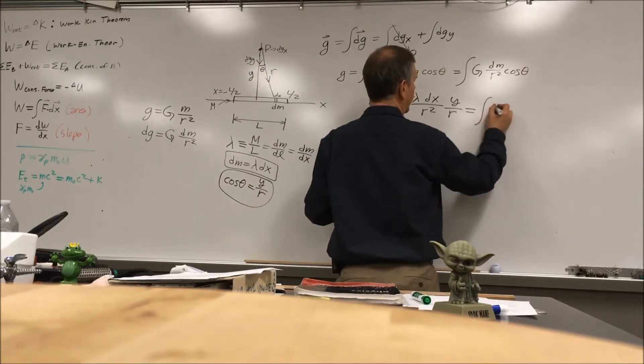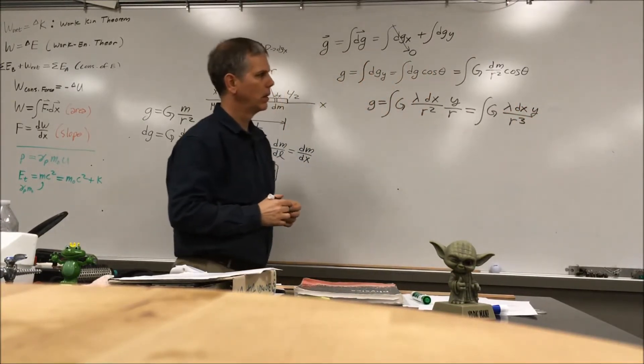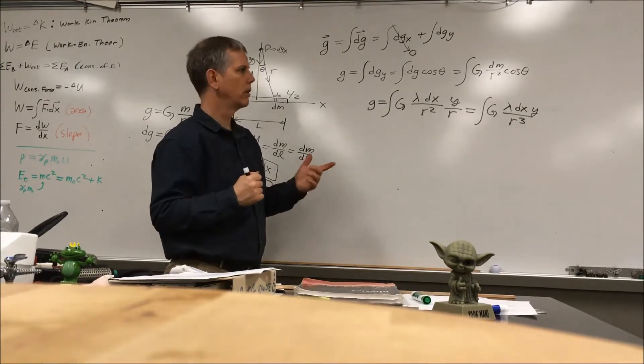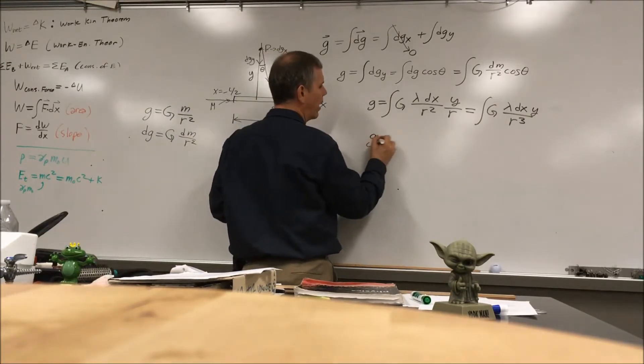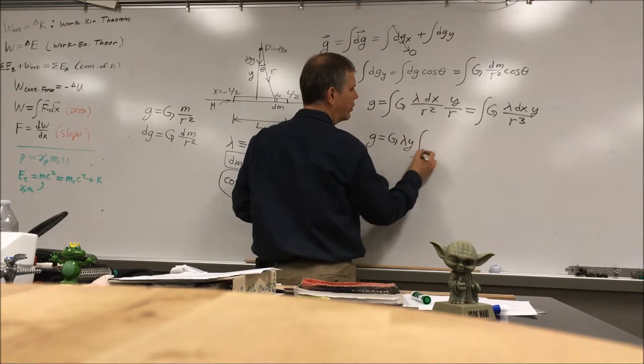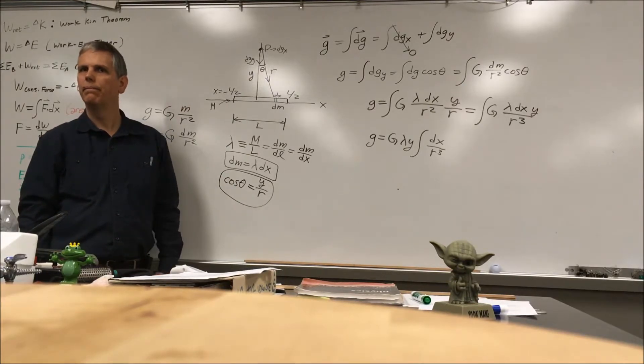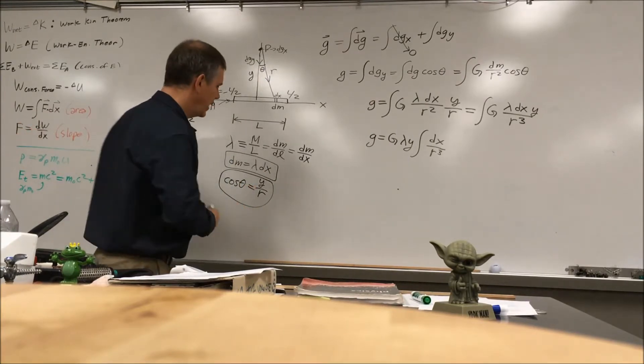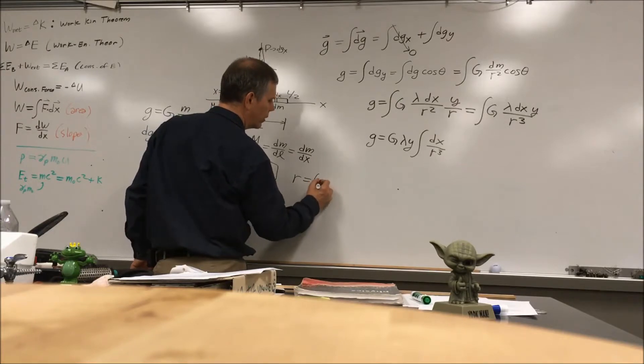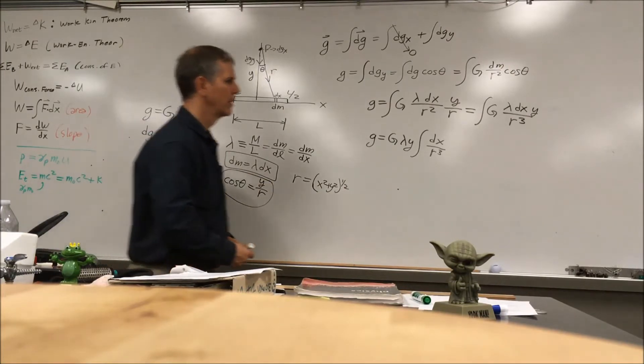Are some of those constants? Big G is a constant. Does y stay constant? Yes. Does lambda stay constant? Yes. So now we take the constants out and we get G lambda y integral of dx over r cubed. We're so close. But doesn't r vary? R changes, because it gets bigger over here and smaller over here. But remember a little while ago we figured out what r was. We said that r equals the square root of x squared plus y squared to the one half. And y is a constant. So let's put it all in.